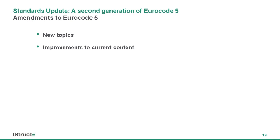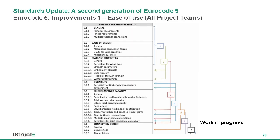Moving to improvements rather than new topics: the first improvement is to how the connections chapter is organised. What I'm showing is our proposal for how the connections chapter should be structured, so that a designer doing a screw connection is not jumping around the document — rather, there's a linear flow. There will be some areas where 100% linearity isn't achievable, but we will work on that. Other ease-of-use improvements include incorporating material values directly into Eurocode 5 so designers don't have to go to separate material standards.